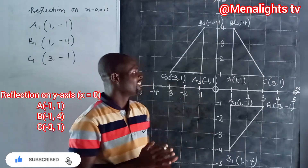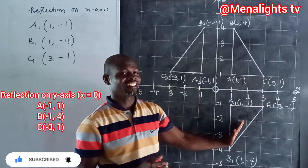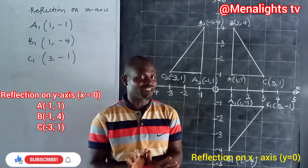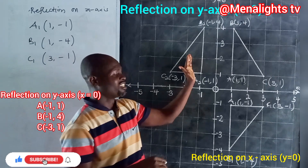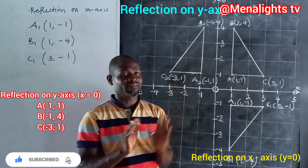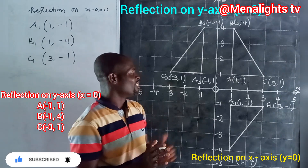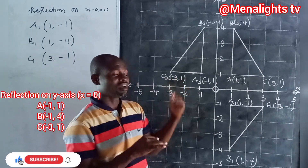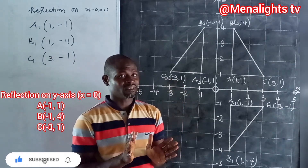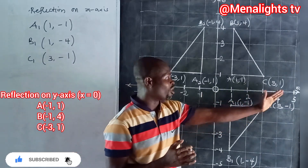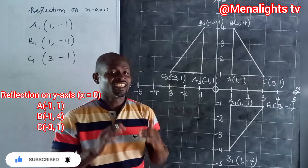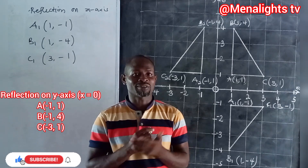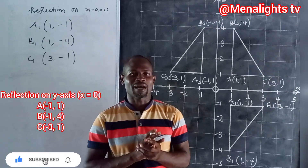As you can see, the object is here. The first image is the reflection on the x-axis, or the reflection on the line y = 0. The second image is the reflection on the line x = 0, or the reflection on the y-axis. On the y-axis reflection, all x-coordinates are negative. On the x-axis reflection, all y-coordinates are negative. Thanks for watching — remember to subscribe to Manalize TV for more updates.